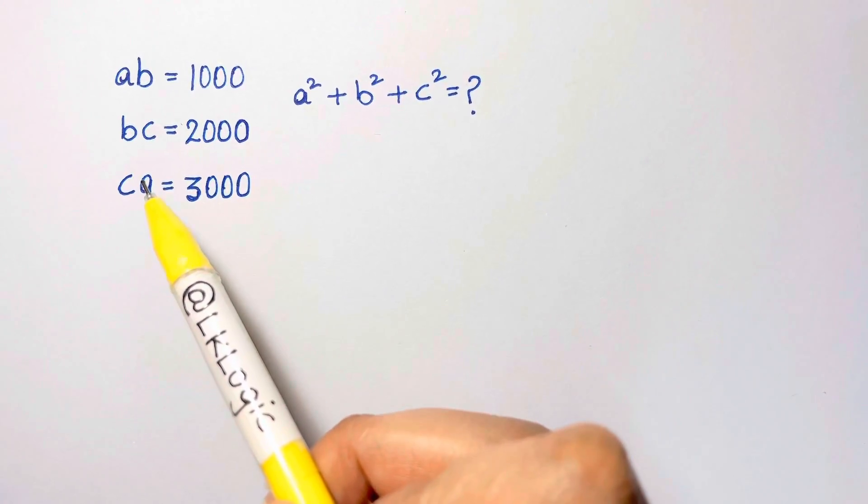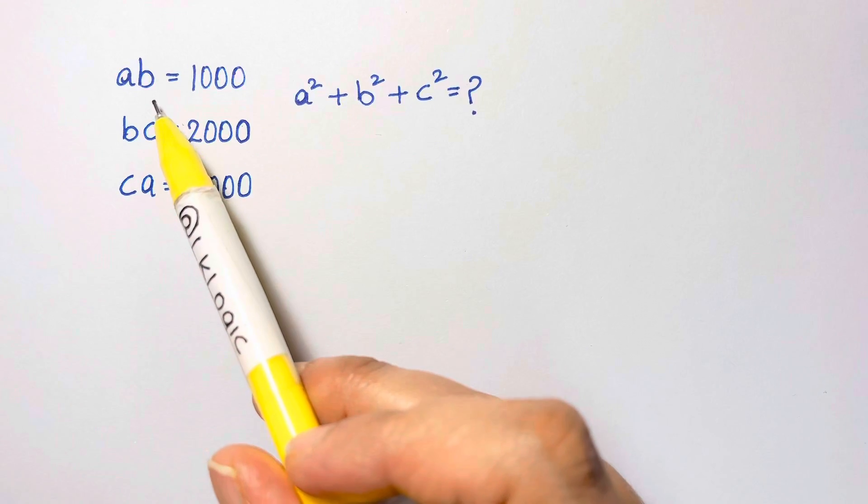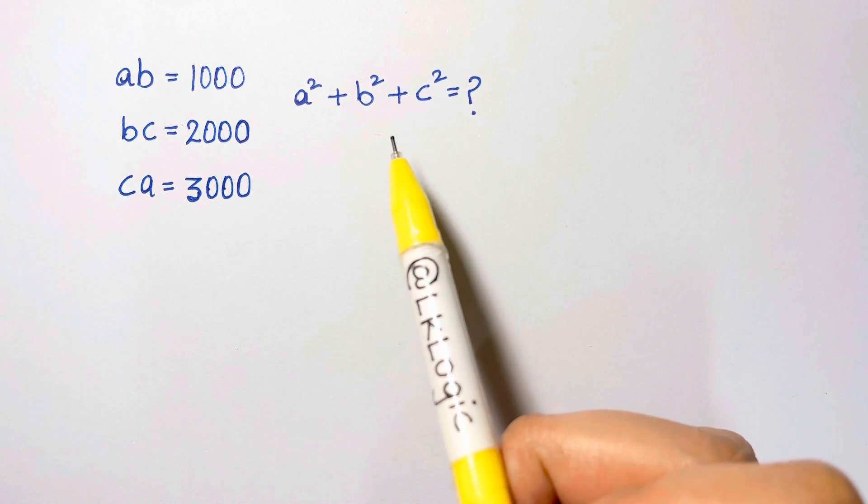Hi guys, here we're going to solve a nice algebraic problem. So here we have been given ab, bc, and ca. We have to find a² + b² + c².